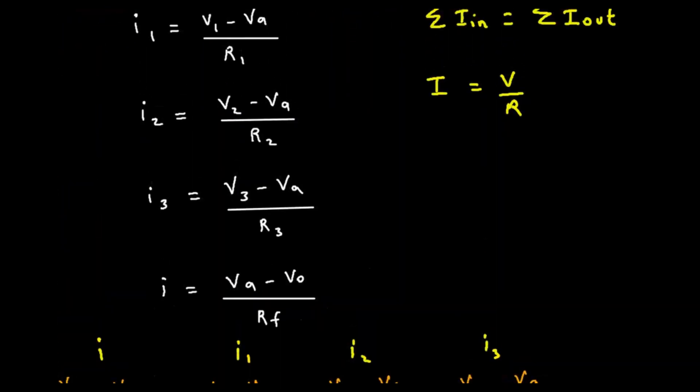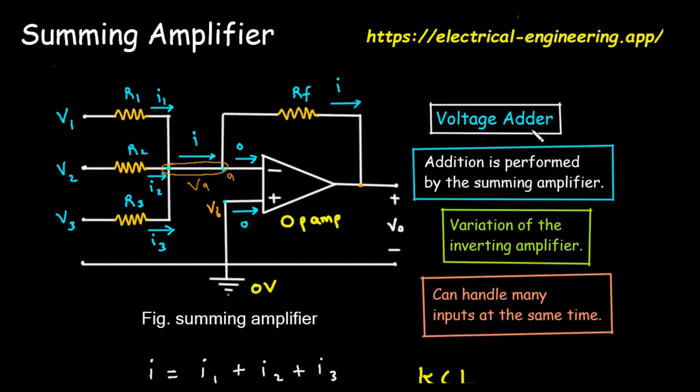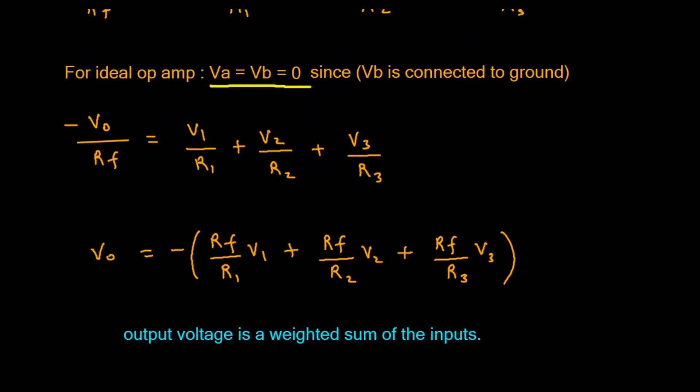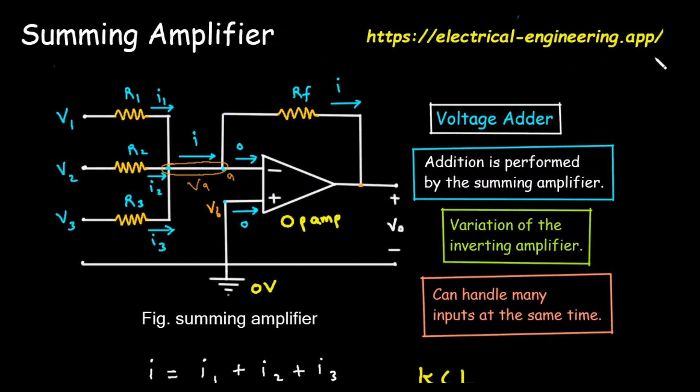So, there you have it. The summing amplifier is a powerful op-amp circuit that produces an output voltage that is the inverted, weighted sum of its multiple inputs. We learned that it works because of two key principles: Kirchhoff's law, which tells us how the currents add up, and the concept of the virtual ground, which is created by the op-amp's behavior and dramatically simplifies the math.